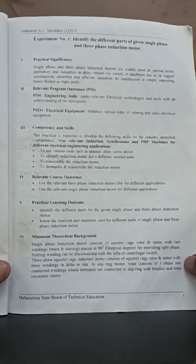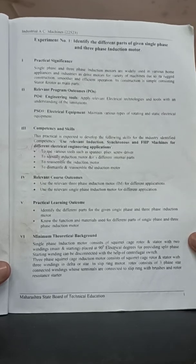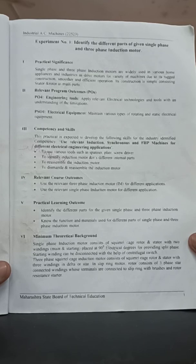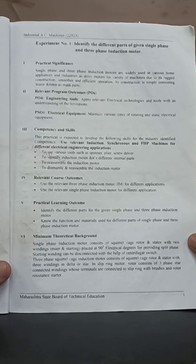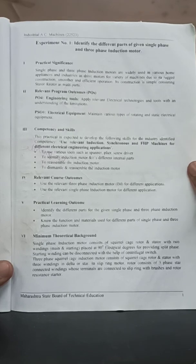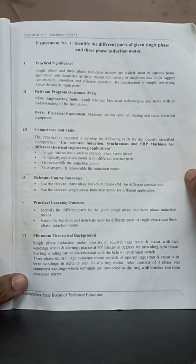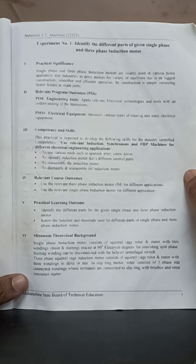In the subject IAM — Industrial AC Machines — the first practical is to identify the different parts of a given single-phase and three-phase induction motor. The practical significance is that single-phase and three-phase induction motors are widely used in industries; they are the hearts of industries. We also need to know the tools used for dismantling or repairing an induction motor. The learning objectives are to identify the different parts and know the function and materials used in each part.